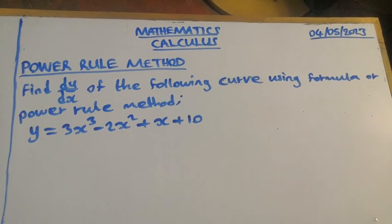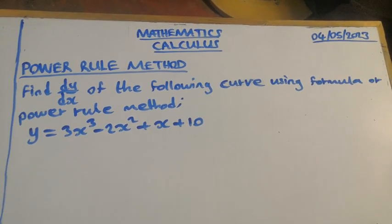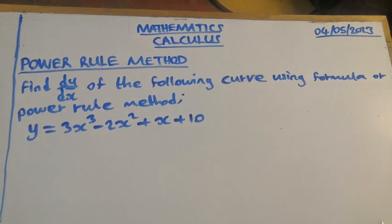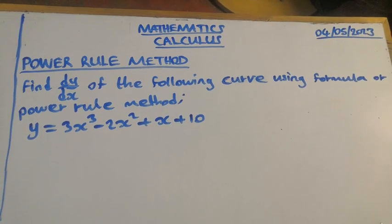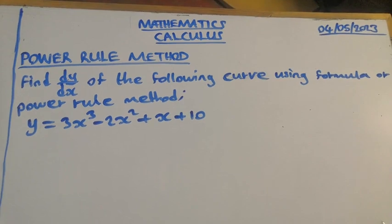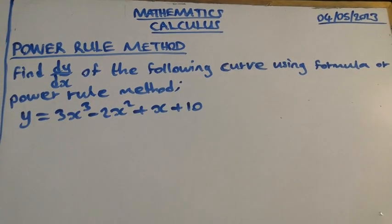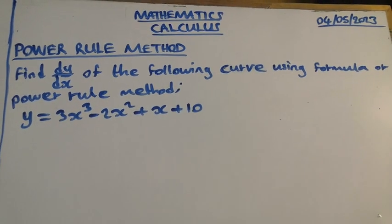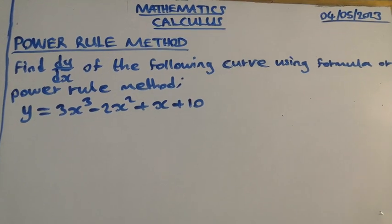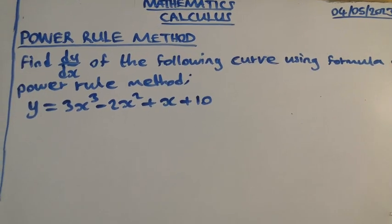Calculus power rule method. Find dy/dx of the following curve using formula or power rule method: y = 3x³ - 2x² + x + 10.